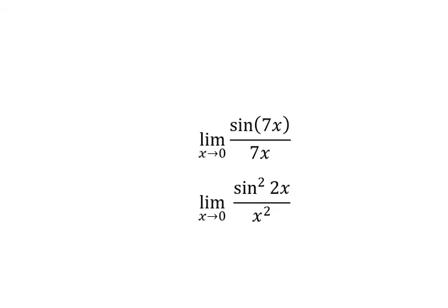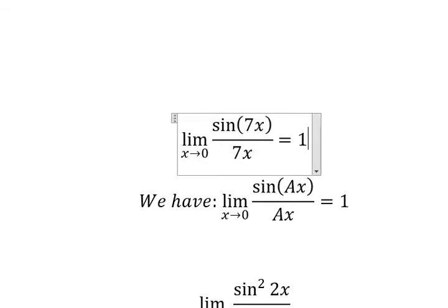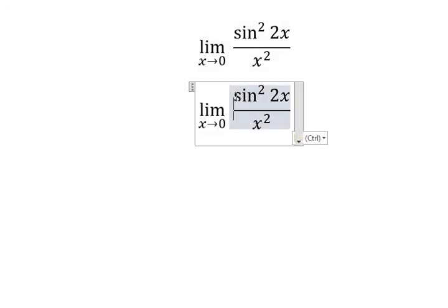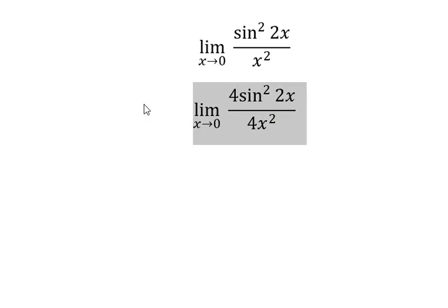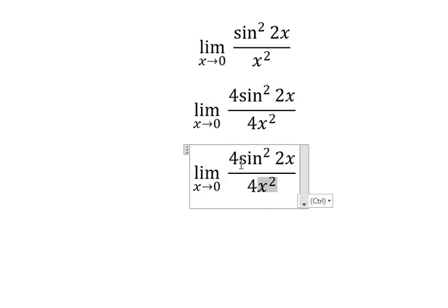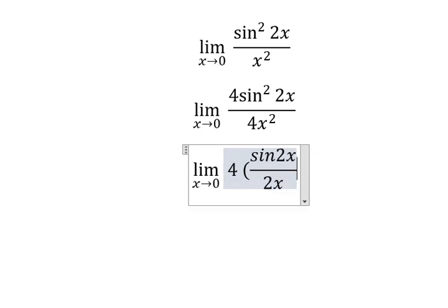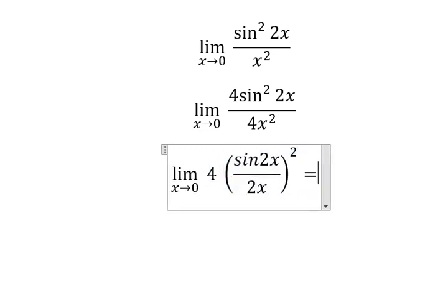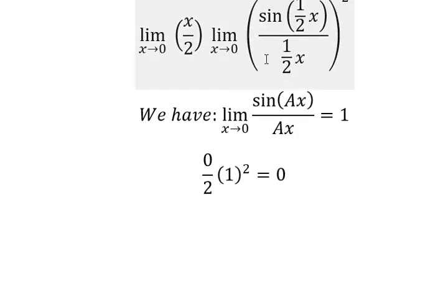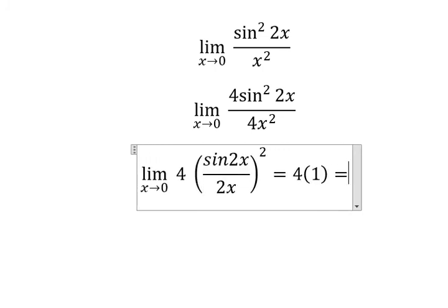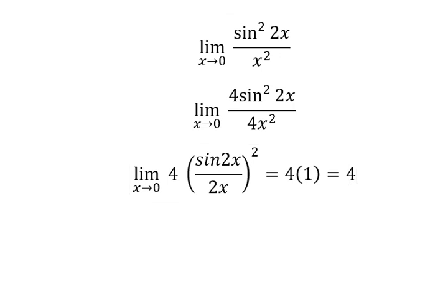Question number three — the next one: we apply the same formula. You get number 1. The last part: we put the number 4, and we can write it as 4 multiplied by sine squared 2x over 2x. Applying the same formula gives 1, so we have 4 multiplied by 1 equals 4. This is the final answer.